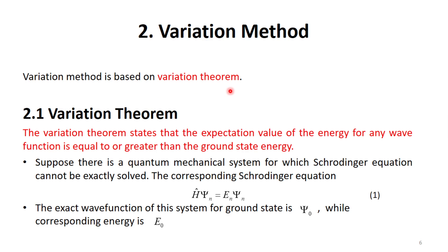What is the variation theorem? The variation theorem states that the expectation value of the energy of any trial wave function is equal to or greater than the ground state energy. So if we choose any wave function of the system, the energy associated with that wave function should be equal to or greater than the ground state energy of the system.